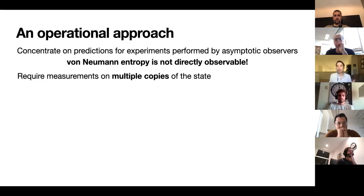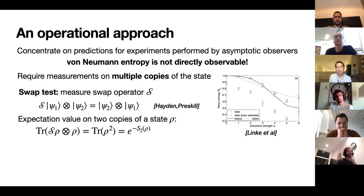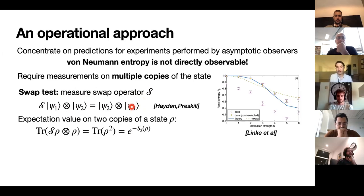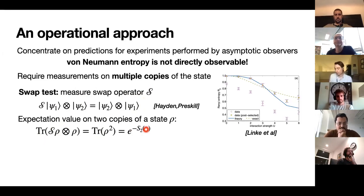The von Neumann entropy is not a directly observable thing because it's not a linear function of a density matrix — trace rho log rho is not an expectation value of an operator. The only way you can deduce the von Neumann entropy is by doing measurements on multiple copies of the state. One simple way to do that is what's called the swap test. Hayden and Preskill introduced this in the context of black hole physics in their beautiful paper, described as a way to tell pure states from mixed states with a simple measurement. You just measure an operator S that takes two systems and exchanges them, and its expectation value on two copies of a state with density matrix rho is the trace of rho squared — the purity — related to the second Rényi entropy.